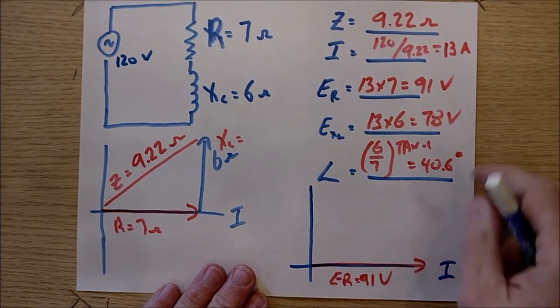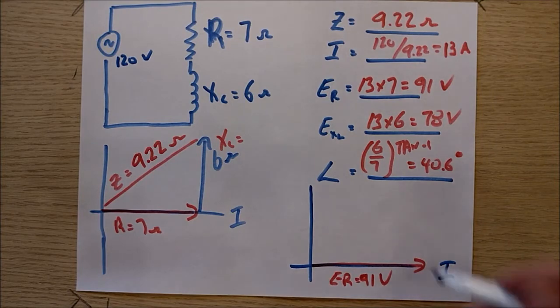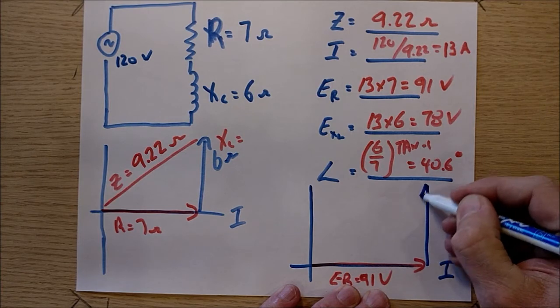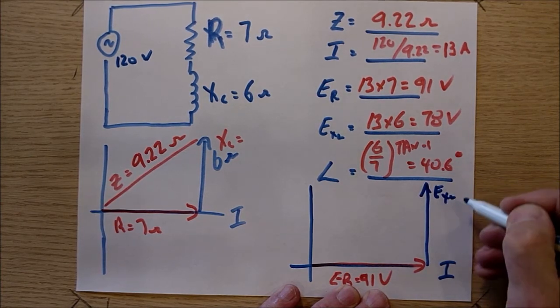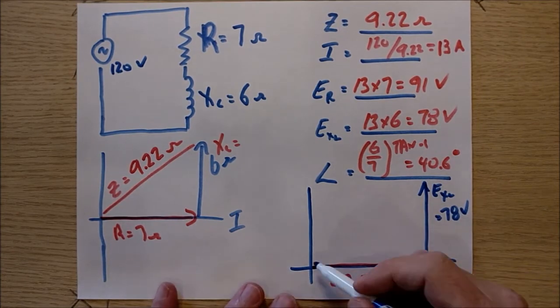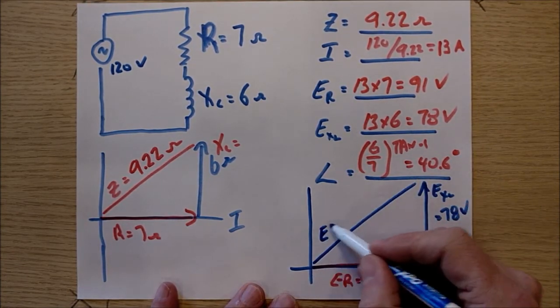My inductor will always be the vertical line. It's going to sit here, but I'm going to move it tip to tail. So it's going to sit right here. This is EXL. It's equal to 78 volts. And this should be my total voltage, the sum of the two.